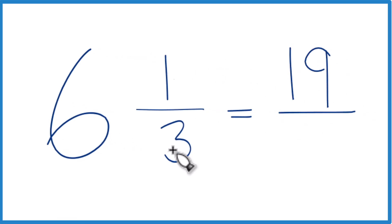And then you just bring the denominator across and you get 19 thirds. So our mixed number, six and one-third, that equals the improper fraction 19 thirds.